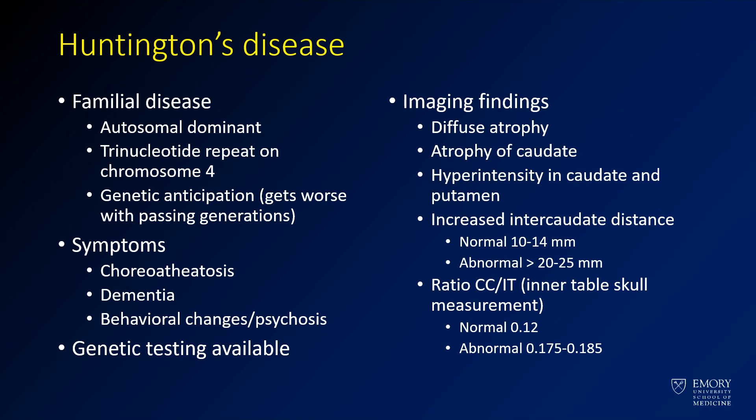Most patients know that they have a familial history of this. The MR findings that you're going to see are diffuse atrophy with specific atrophy of the caudate lobes. Sometimes you can see T2 hyperintensity in the caudate and putamen, and there are some measurements that can be made, but you probably don't need to know more about those.